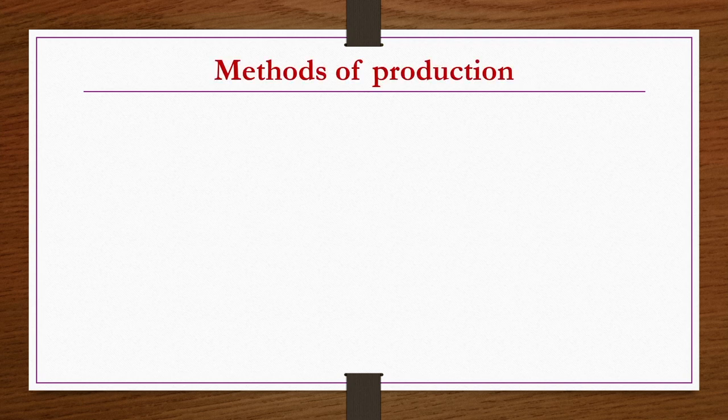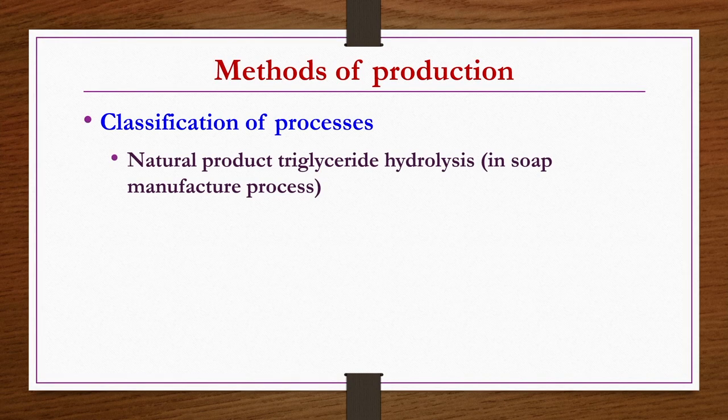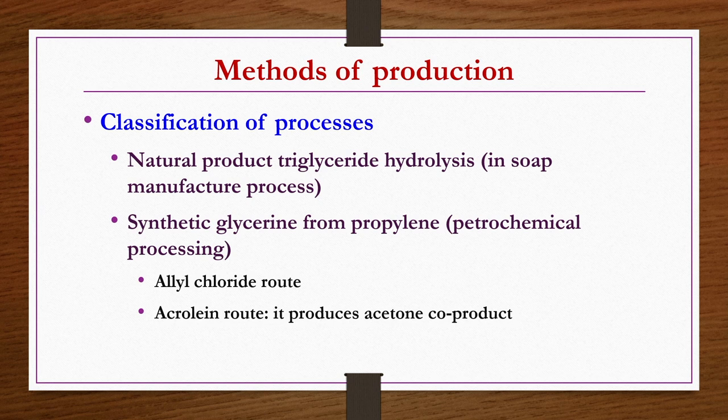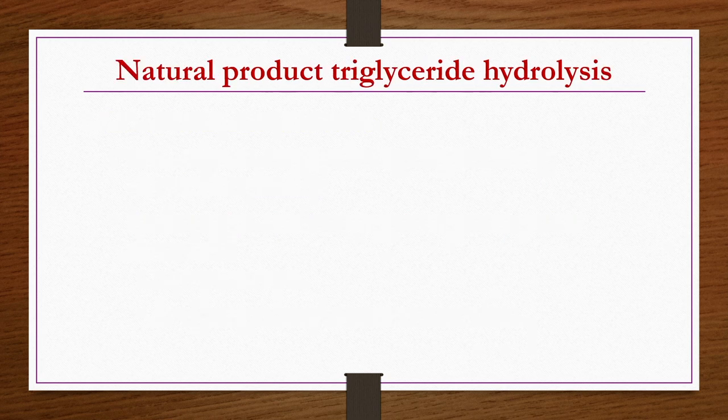Methods of glycerin production: there are two methods — one is the natural product method through triglyceride hydrolysis as discussed in the soap manufacture process, and another is the synthetic chemical approach. Synthetic glycerin can be produced from propylene petrochemical processing via the allyl chloride route or the acrolein route, in which acetone is also obtained as a co-product.